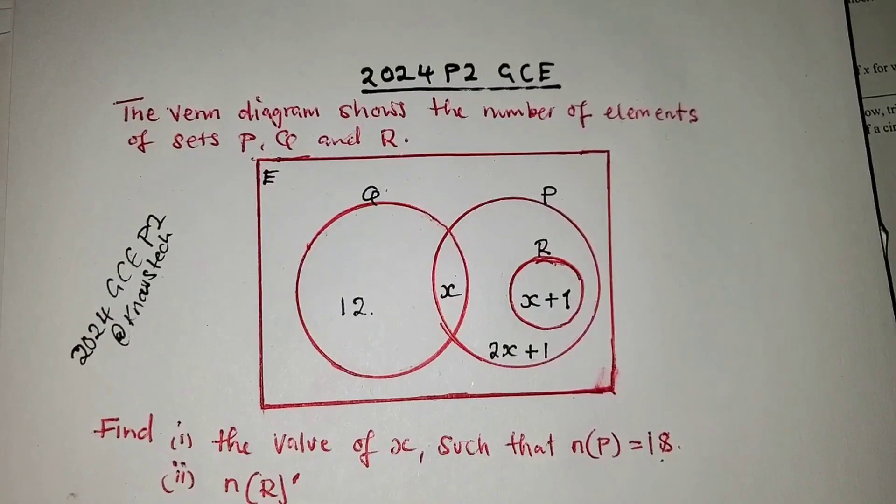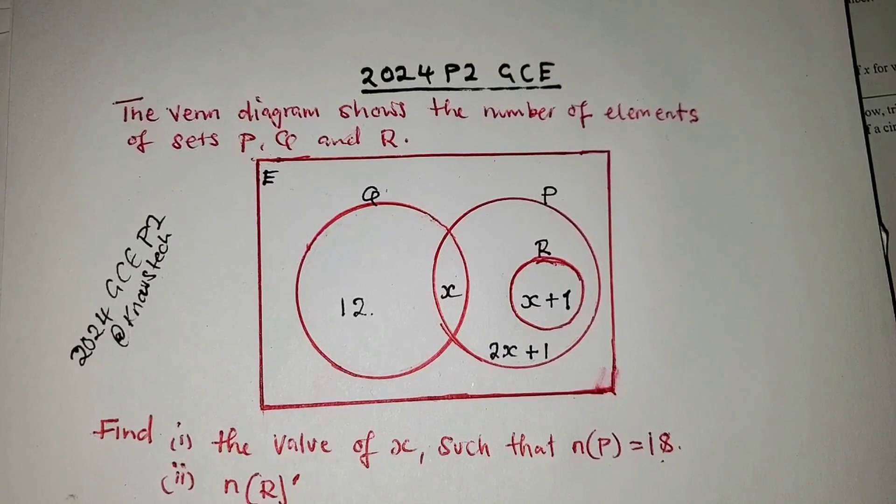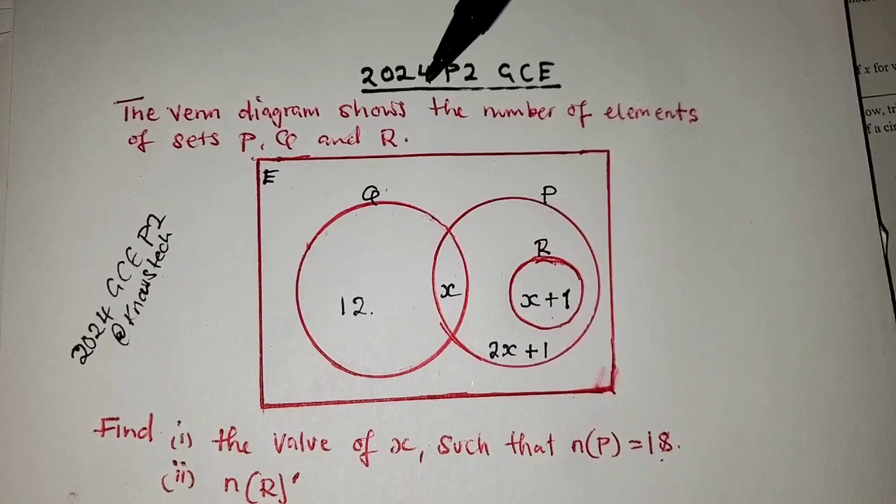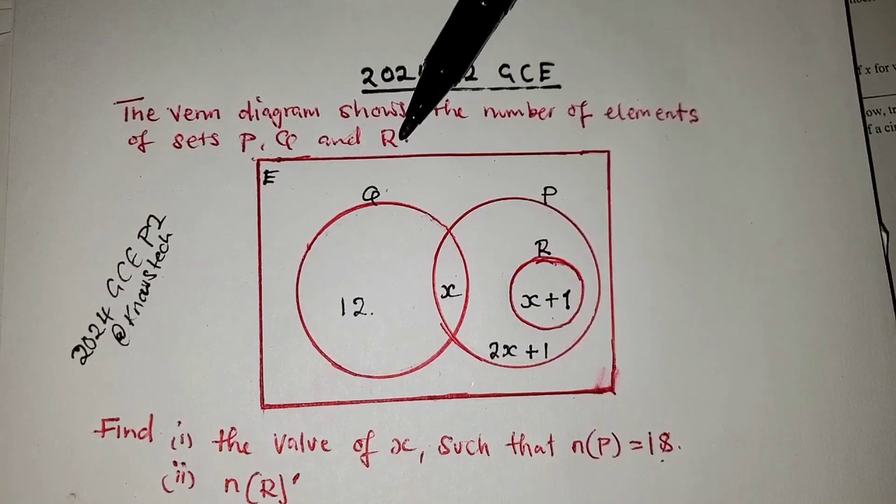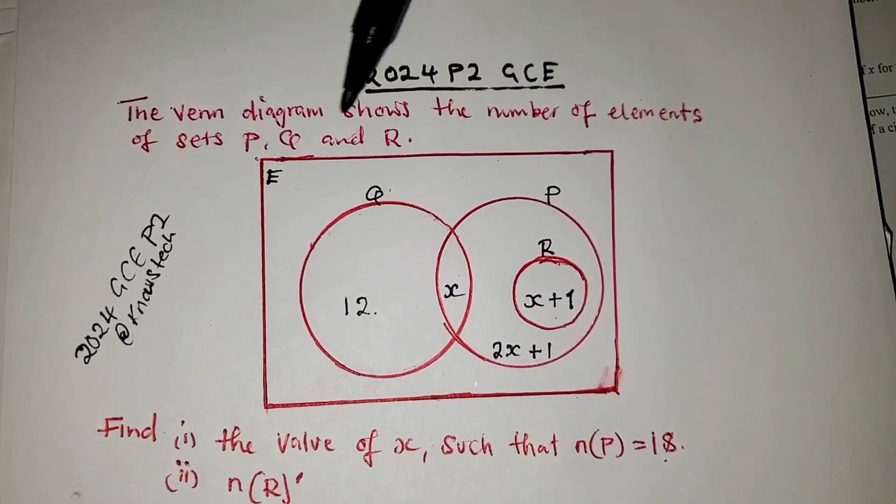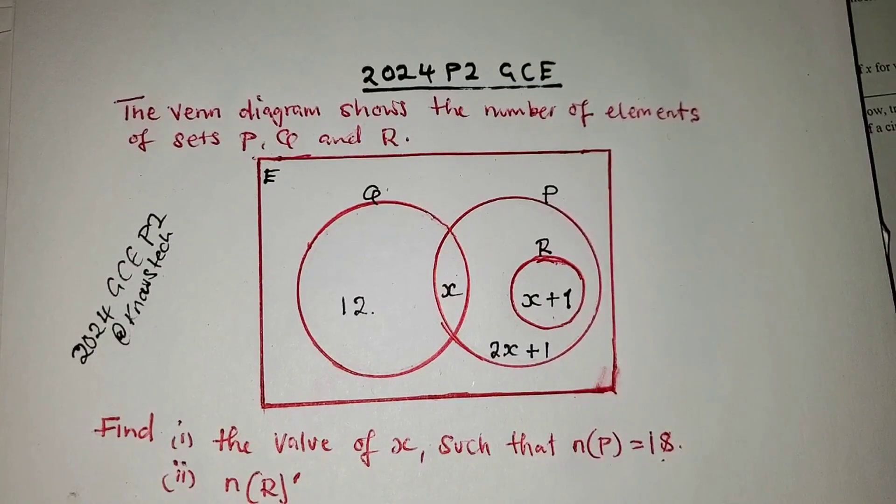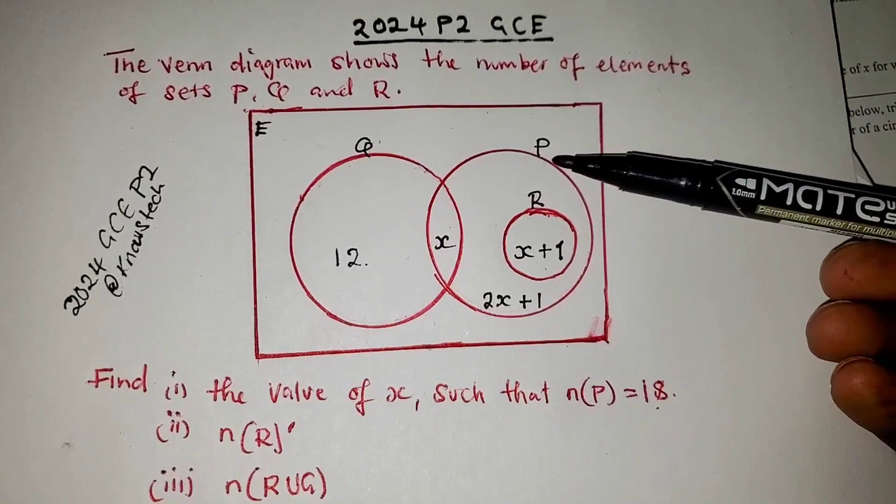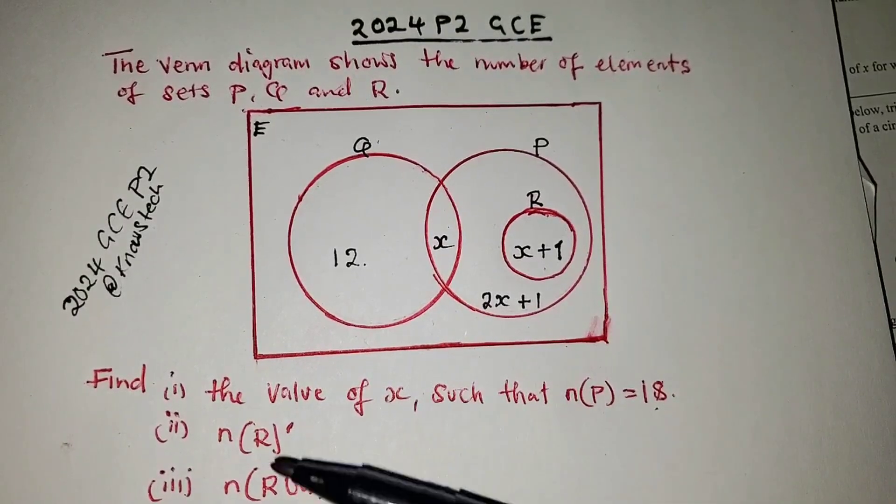Now let's get started. The Venn diagram below shows the number of elements in sets P, Q and R. So you have set P, Q and R. We have P here, Q and R this side. Now listen, set R here is in set P.